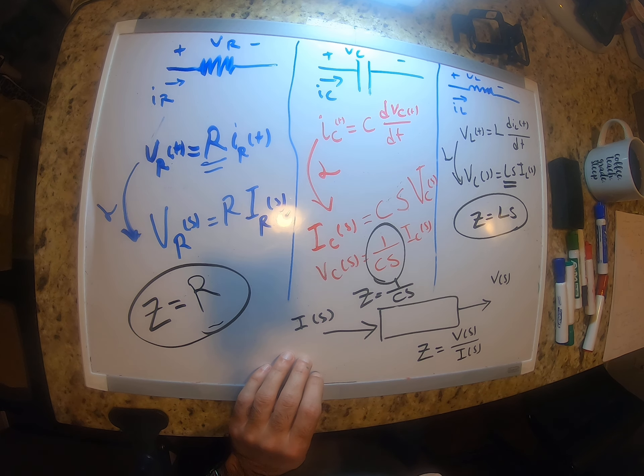I want to re-emphasize that S is equal to J omega. You have seen this: Z is equal to J omega L, or for capacitors it is equal to 1 over J omega C. Now let me show you an example of how this can be helpful.